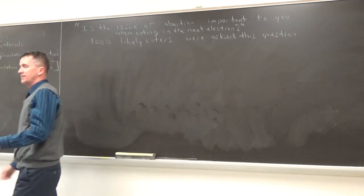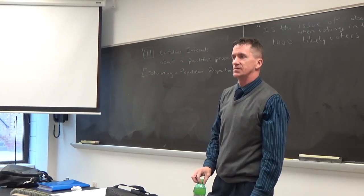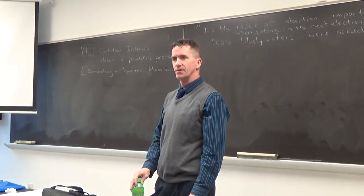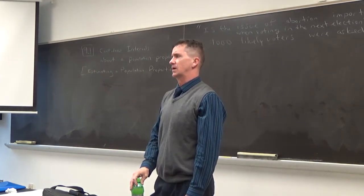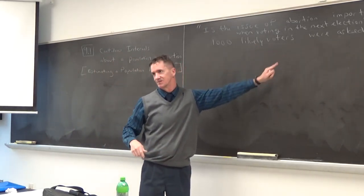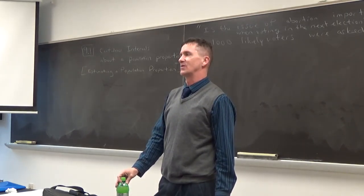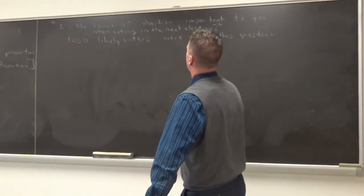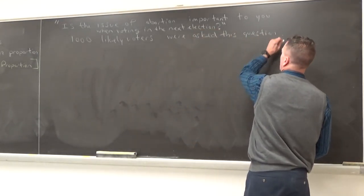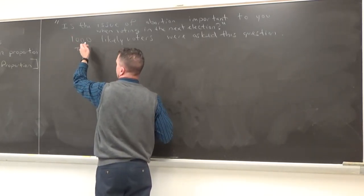They asked likely voters. So, that means if they made a phone call to someone, it was a random phone call. And the person answered, and they probably asked them a few questions first. When was the last time you voted? And the person was like, oh, I haven't voted ever. Do you plan on voting in the next election? No, it's not worth my time kind of thing. Well, then that person wouldn't be a part of this poll. So, that's when they had this likely voter criteria. So, if they call them and the person answers and they're thirteen years old, they're not a likely voter. So, 1,000 likely voters were asked this question.